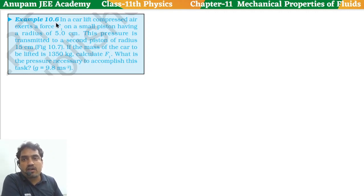Question is: in a car lift, compressed air exerts force F1 on a smaller piston having radius 5 cm. This pressure is transmitted to a second piston of radius 15 cm. We are seeing the diagram.